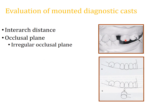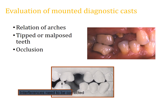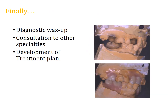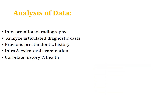Evaluation of diagnostic casts is very helpful to check for interarch space, registration shape, and any undercuts. All these things can be checked with a diagnostic master setup. Any occlusal interferences will need to be adjusted beforehand in the mouth preparation appointment, and tilted teeth may need to be uprighted to provide space for the missing teeth. A wax-up on the diagnostic cast can give a better idea of the future prosthesis.